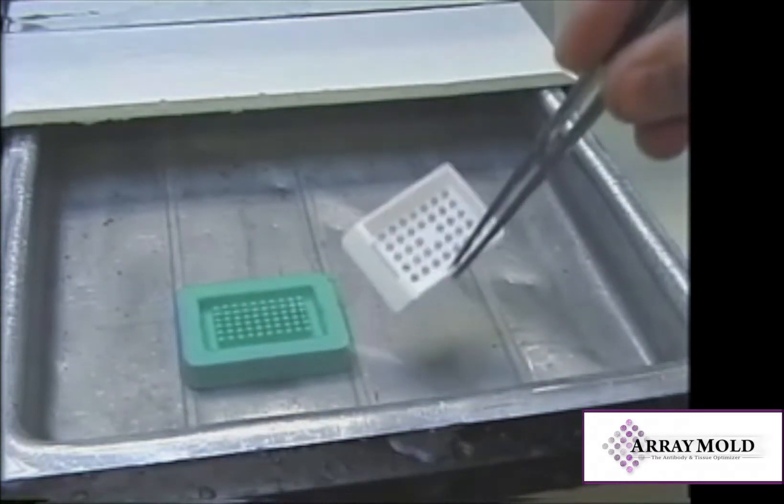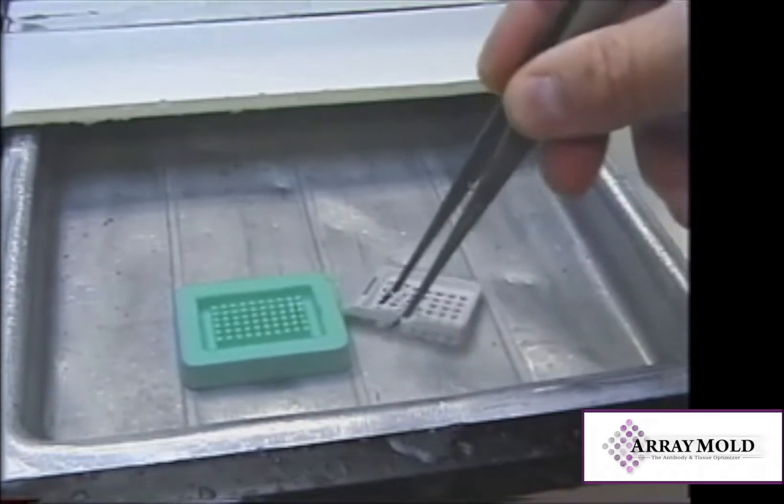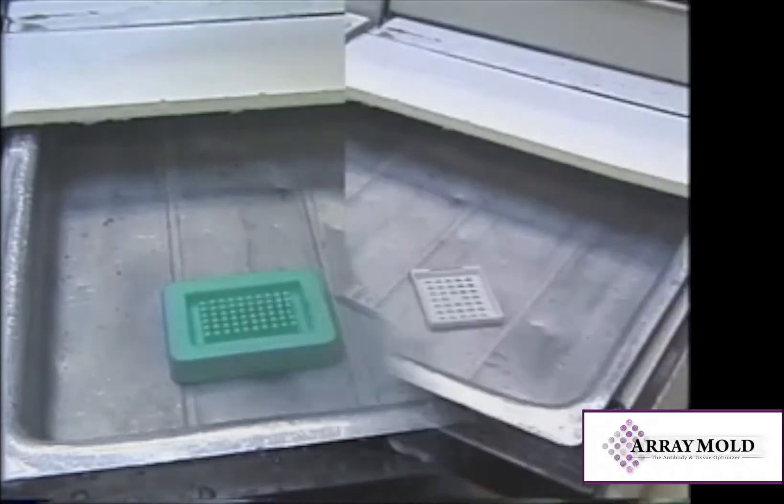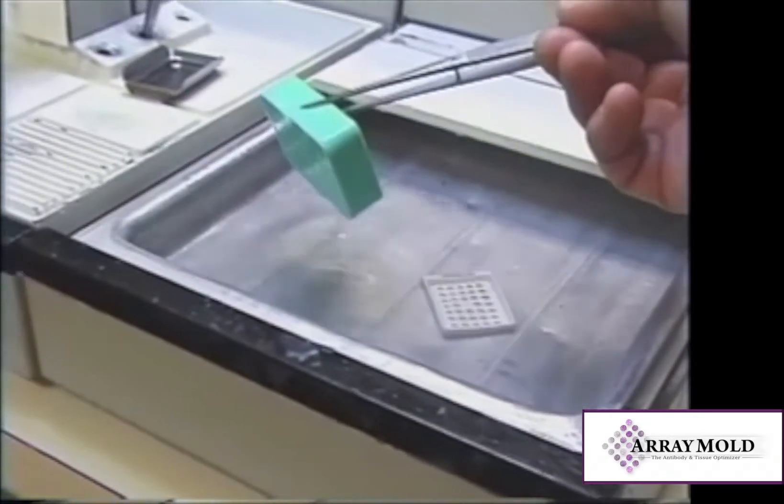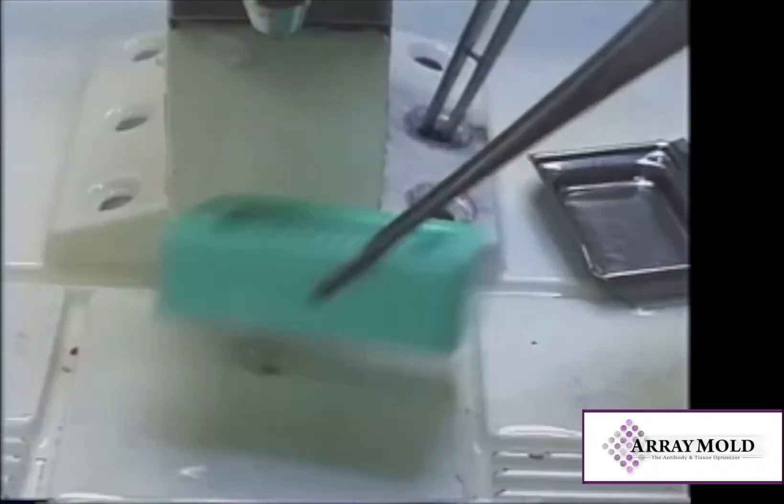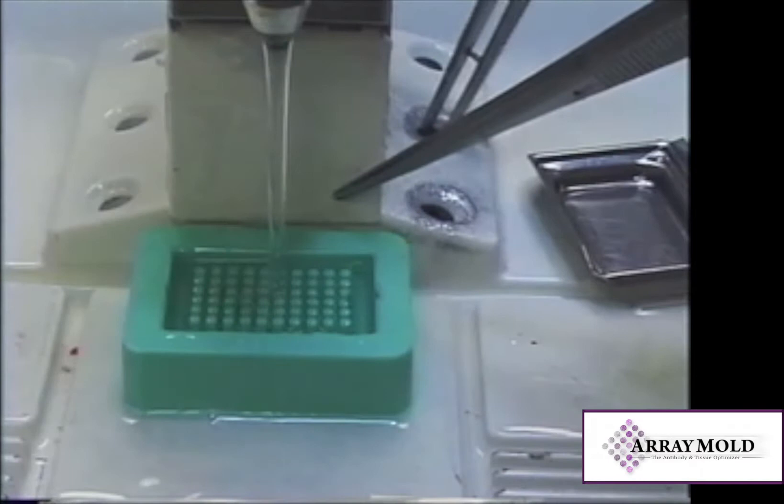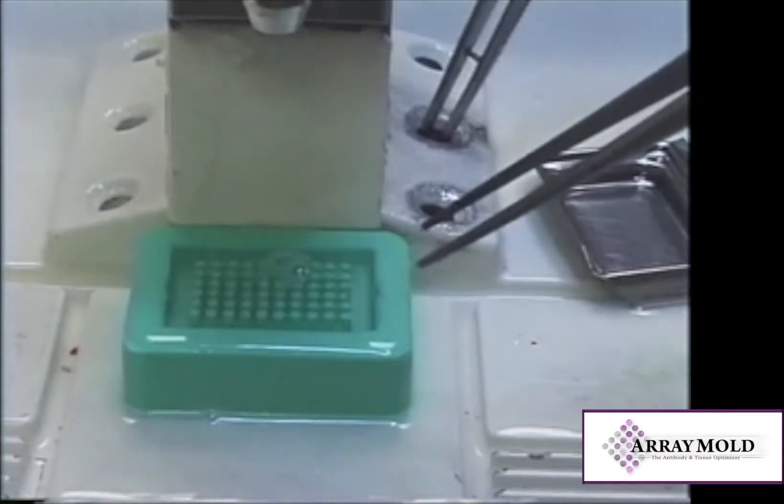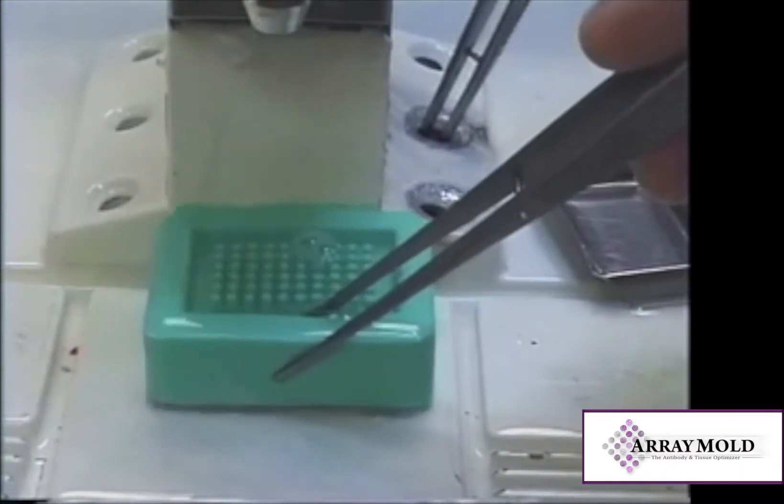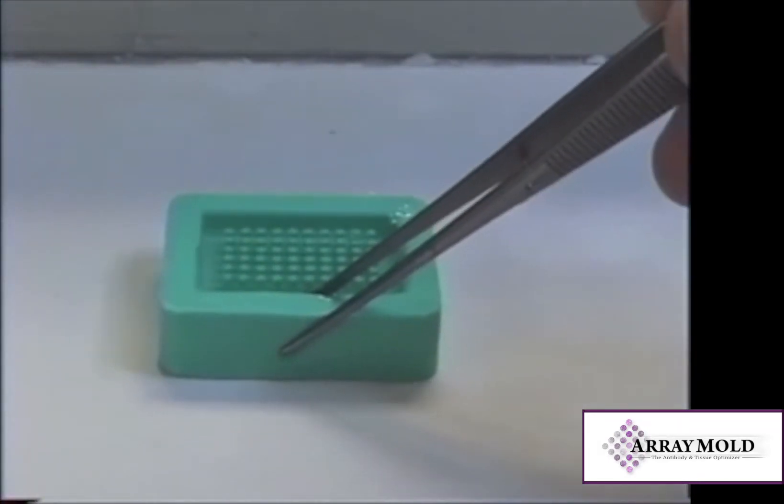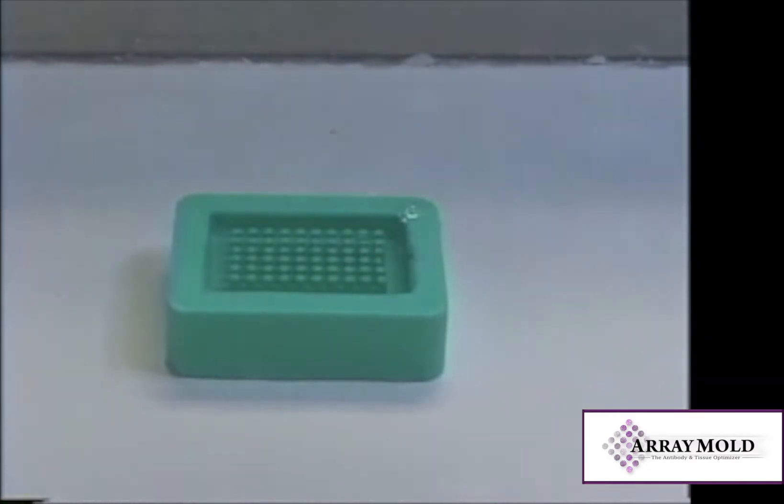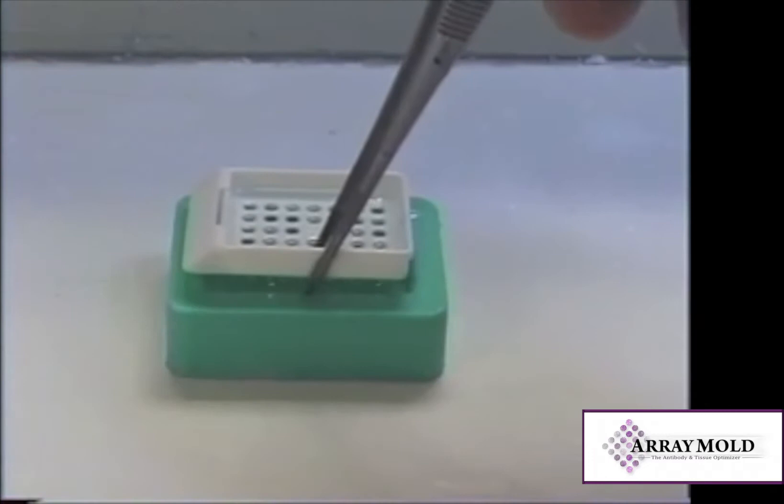Submerge the plastic cassette in paraffin as well. Fill the mold with embedding type paraffin. Place the mold on a cold plate and set the plastic cassette in the center of the array mold and allow to cool for approximately one hour.